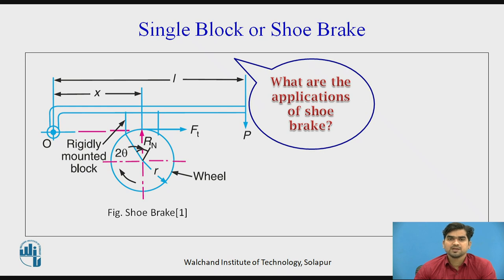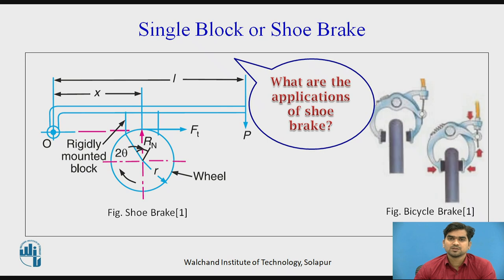What are the applications of the shoe brake? Generally, shoe brakes are observed in the case of bicycle brakes, or we can see train wheels — for stopping the train, on the train wheels we are using the shoe brake. Such kind of brake is called a single block or shoe brake.